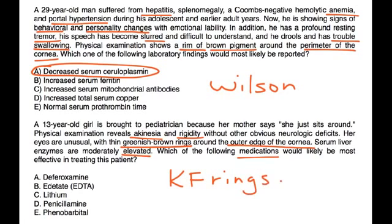The treatment of Wilson disease is lifelong with a medication known as penicillamine. It is a chelating agent that binds to the copper and eliminates it through the urine.